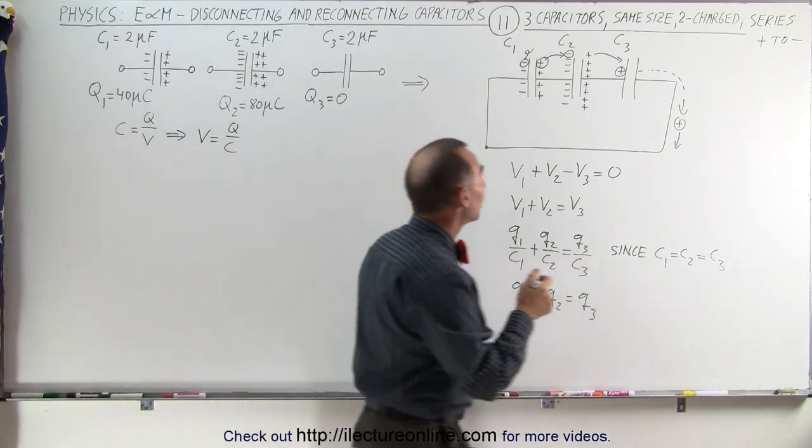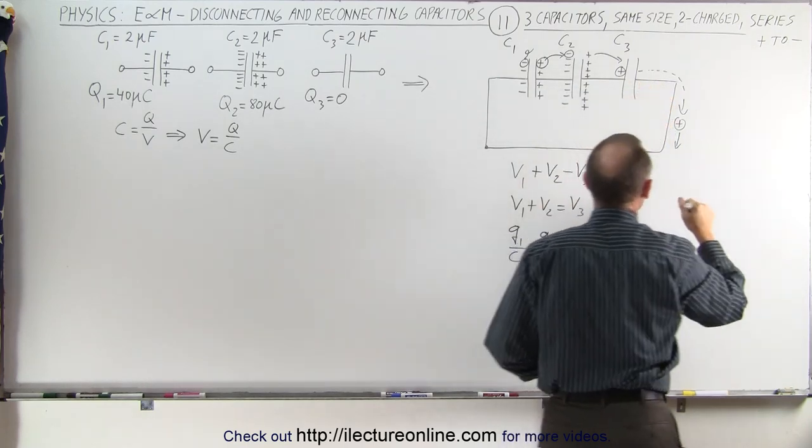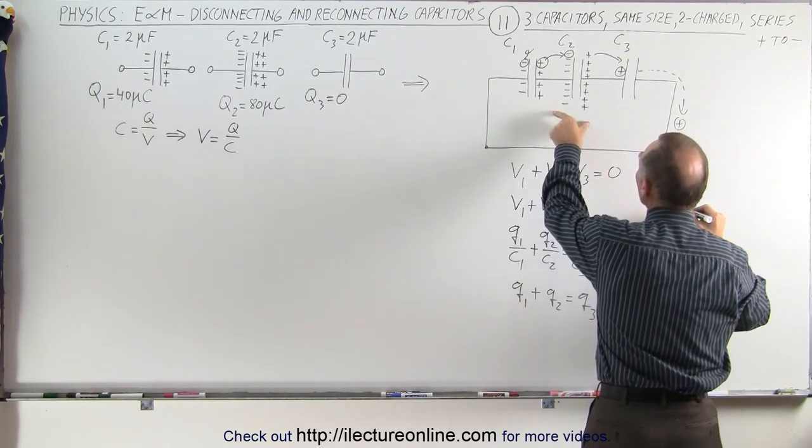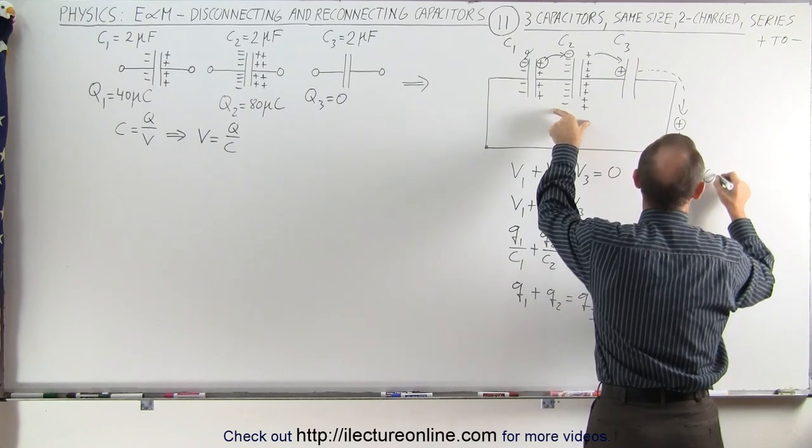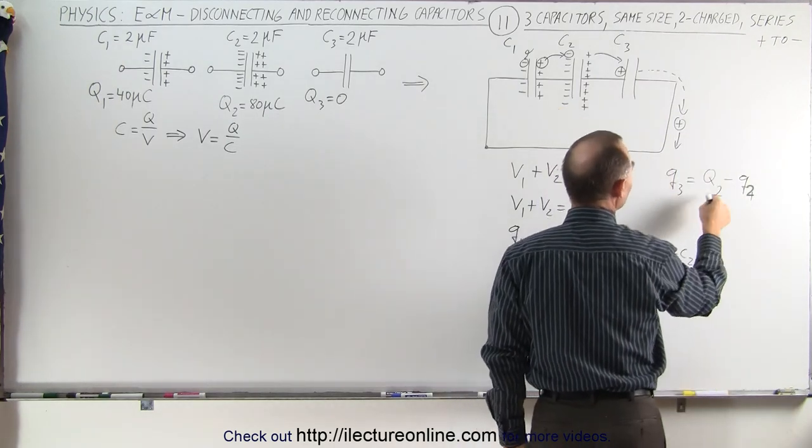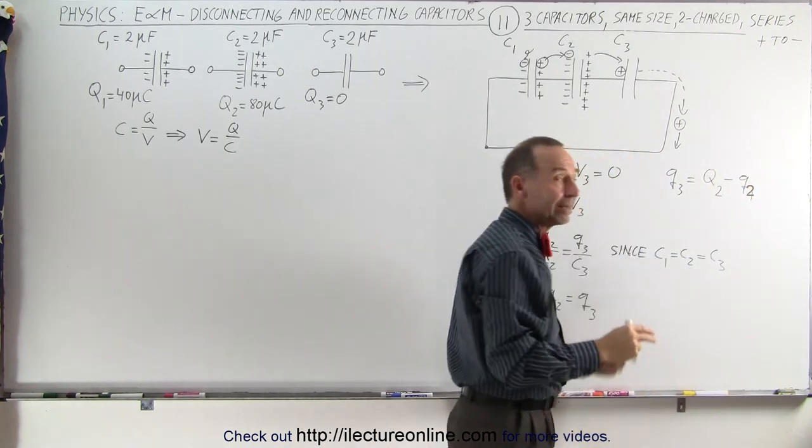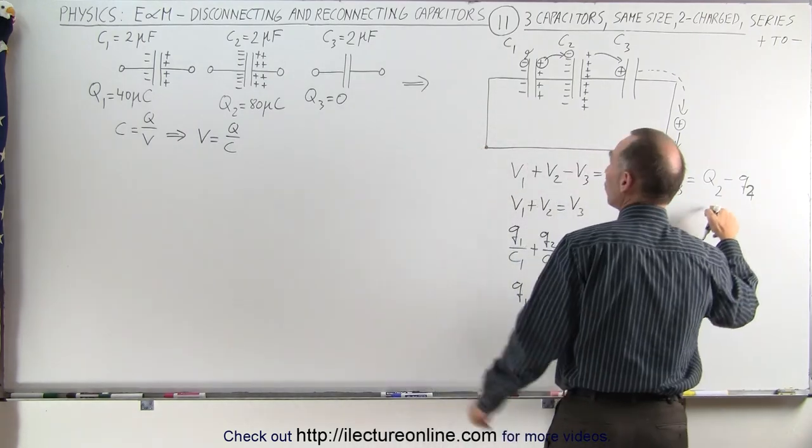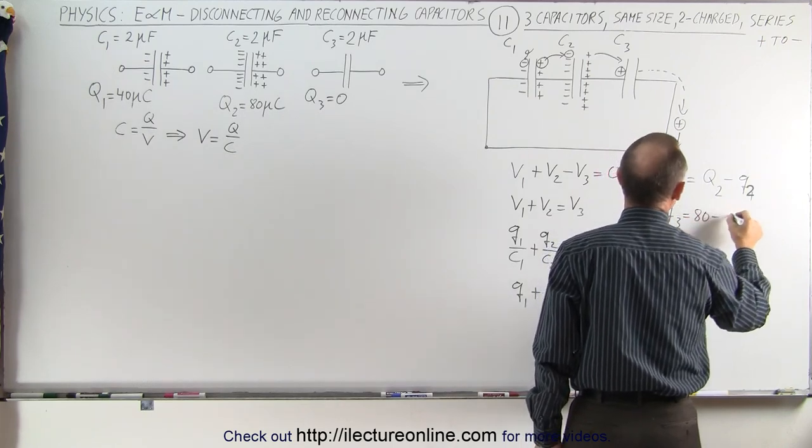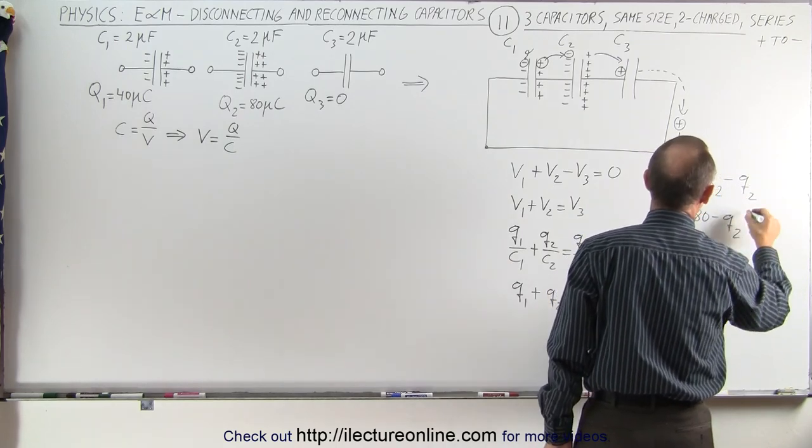Well, first of all, here we can see that whatever charge leaves C2 will end up on C3, which means that Q3 is equal to the change on C2, which means how much C2 started with minus how much it ends up with. So the charge on Q3 is simply the difference between how much C2 had on it minus how much is remaining at the end. That difference moved to C3, and since Q2 is equal to 80 microcoulombs, we can say that Q3 is equal to 80 minus Q2.